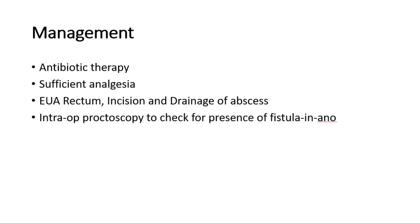For management, patients should be started on antibiotic therapy and provided with sufficient analgesia. The main management for anorectal abscesses is examination under anesthesia of the rectum and incision and drainage of the abscess. Intraoperative proctoscopy should be performed to check for the presence of any identifiable fistula in ano, also called perianal fistula, which is covered in another video.